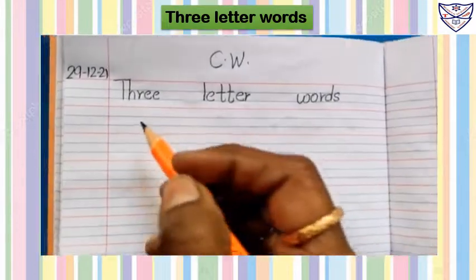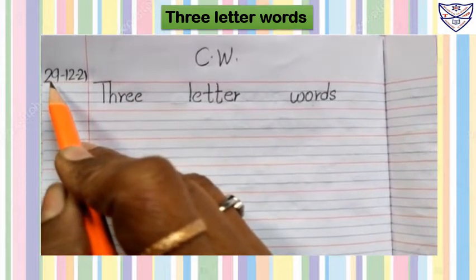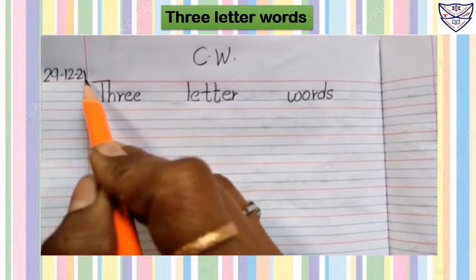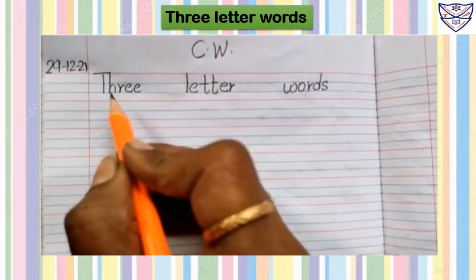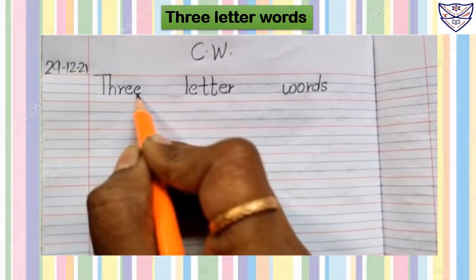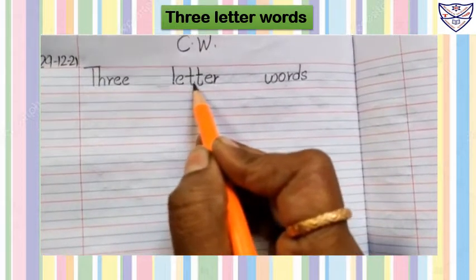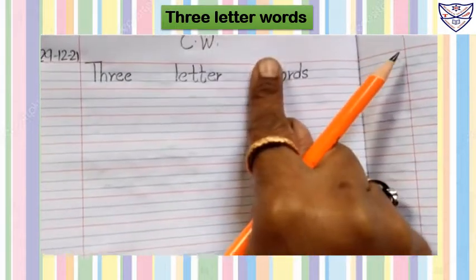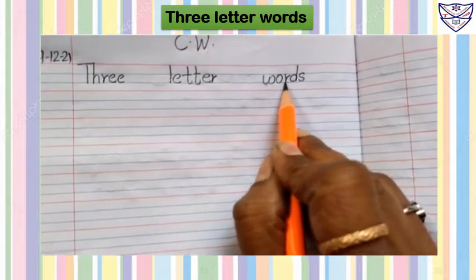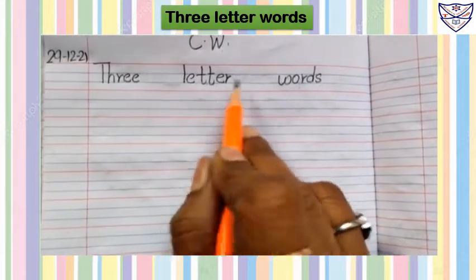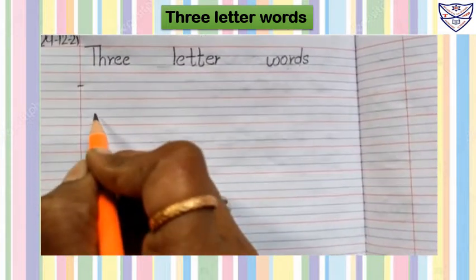Today our classwork is three letter words. First of all, write today's date in the margin: 29-12-21. Write here C.W. classwork. Here write heading THREE LETTER WORDS. Leave one line. Start writing from here.